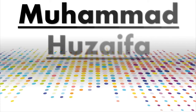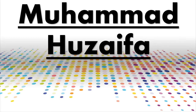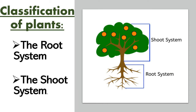A very good morning to all of you. My name is Muhammad Huzaifa. Today I am going to explain to you the parts of a plant. Plants can be classified into two parts: the root system and the shoot system.